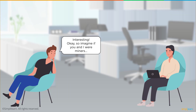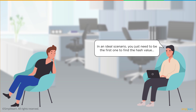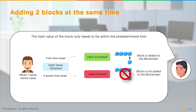Imagine two miners both add a block to the blockchain at the same time. Although this doesn't happen often, there is a way to decide whose block gets added. In an ideal scenario, you just need to be the first one to find the hash value. When adding two blocks at the same time, the hash value only needs to be within a predetermined limit — if the generated hash is less than the target, the block is accepted; if greater, it is denied.